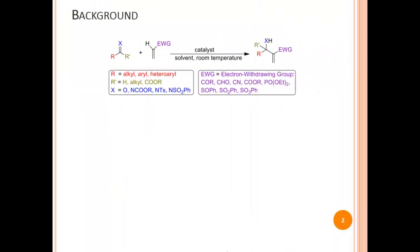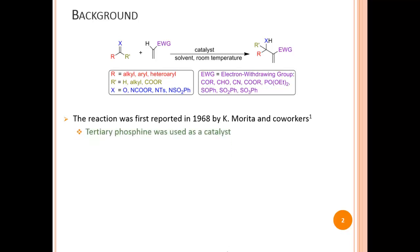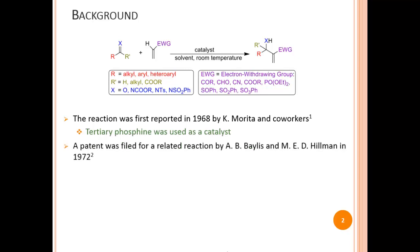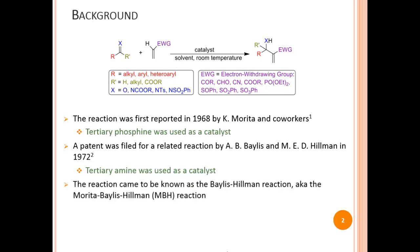This synthetic transformation was first reported in 1968 by a Japanese chemist named Kenichi Morita. In the first reported example, a tertiary phosphine was used as a catalyst. In 1972, a related reaction was performed by British chemist Anthony Bayliss and German chemist Melville Hillman, who used a tertiary amine as a catalyst.